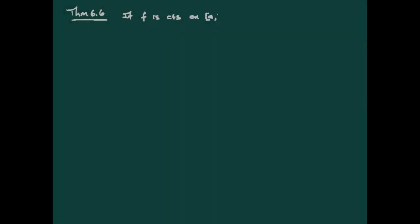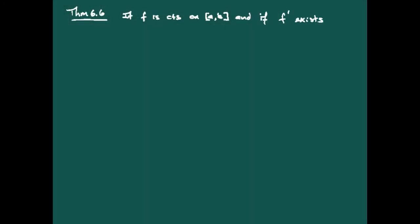Let's take a look at Theorem 6.6, where we start talking about continuous functions as being functions of bounded variation. Suppose we have a continuous function on a compact interval [a, b], and further suppose that it is differentiable and that the derivative is bounded on the interior of (a, b). Then that is enough to give us that f is of bounded variation on [a, b].